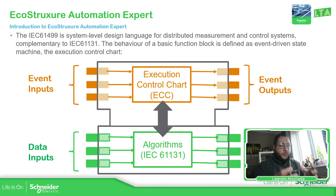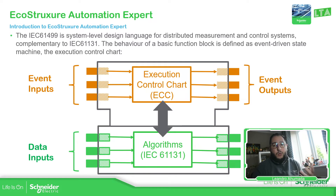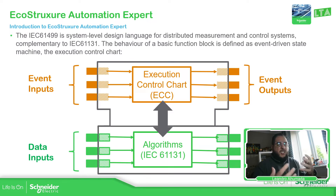In this Execution Control Chart state machine, we can execute code. And if you look here, the algorithm used for execution is based on something we know, which is IEC 61131. So we use IEC 61131 to create logic as well. EcoStruxure Automation Expert doesn't replace the IEC 61131 standard — IEC 61499 is a complement to it.